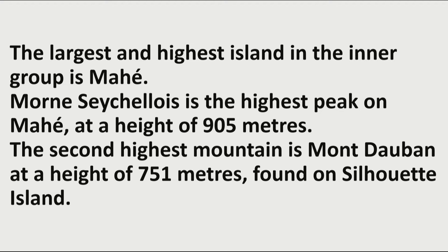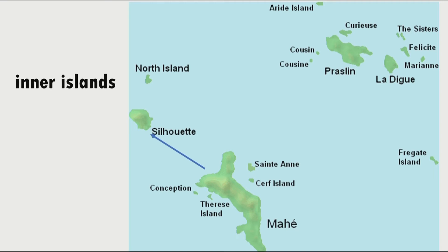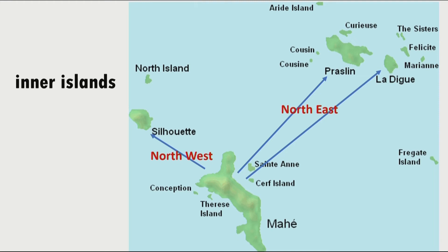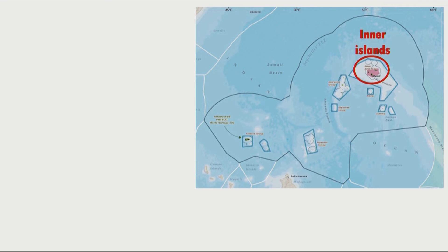The largest and highest island in the inner group is Mahé itself. Morne Seychellois is the highest peak on Mahé at a height of 905 meters. The second highest mountain in the inner group, as well as in all of Seychelles, is Mont Dauban, which is found on Silhouette at a height of 751 meters. Here we have the inner islands. Silhouette is the second highest island and is found to the northwest of Mahé. Praslin and La Digue are two other main islands found to the northeast of Mahé.